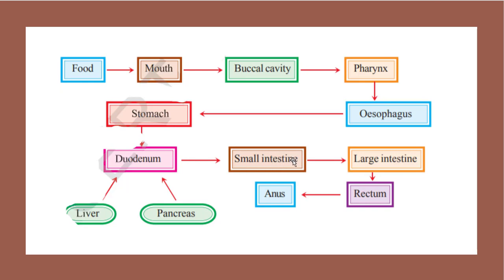From the duodenum, food passes to the small intestine, where the complete digestion process occurs. Later, undigested food is released into the large intestine. The large intestine sends undigested food to the rectum, where it is stored for some time and later expelled out of the body.